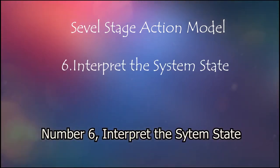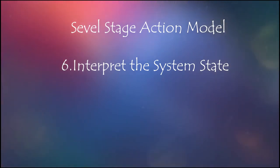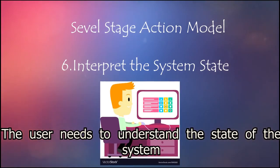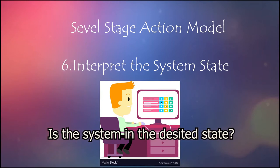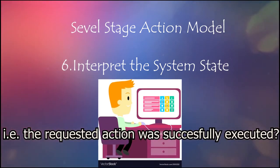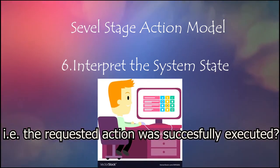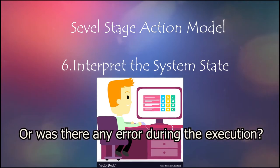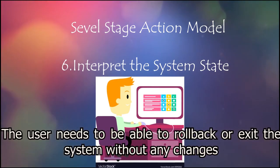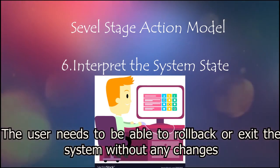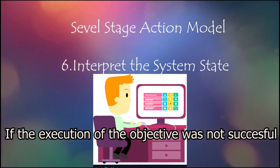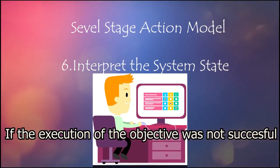Number 6: Interpret the system state. The user needs to understand the state of the system — whether the system is in the desired state, meaning the requested action was successfully executed, or if there was some error during execution. The user needs to be able to roll back or exit the system without any changes if the execution of the objective was not successful.